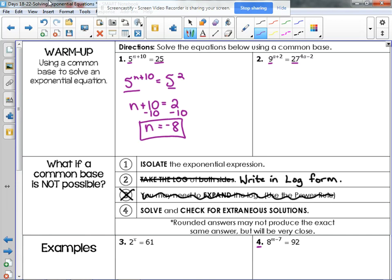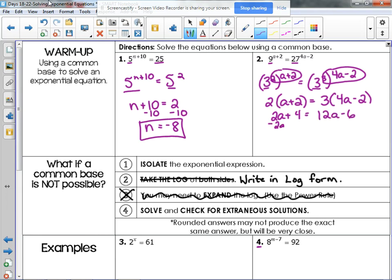Number 2, both sides here need to be changed because 27 is not a power of 9. 9 is 3 squared, and 27 is 3 cubed. Now I have the same base. I need to multiply my exponents here. 2 times (a plus 2) is equal to 3 times (4a minus 2). I need to distribute and then solve for my variable. So, 1 is equal to a, or a is equal to 1. And again, I could plug it back in to check. I'm not going to take the time to do that.